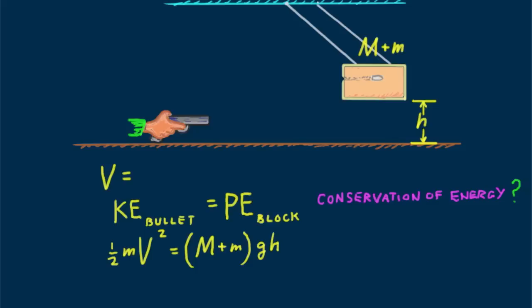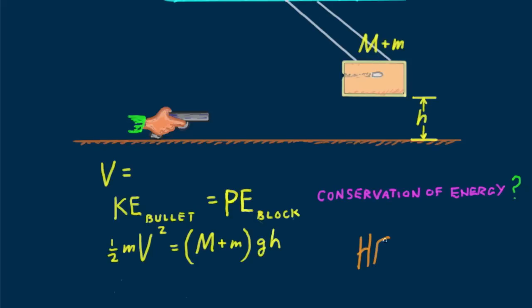Because the kinetic energy of the bullet does more than raise the block, much more. The high-speed bullet appreciably heats the block while it slams to rest inside. You wouldn't want to put your bare finger into the bullet hole of the block before it cooled.